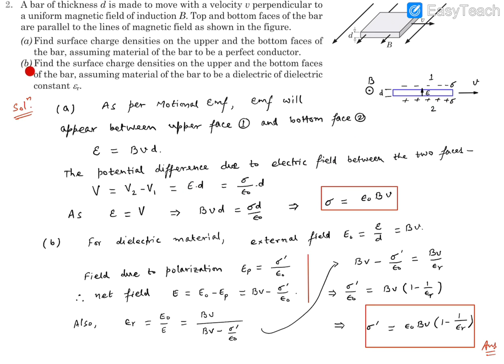Now, come to part B. If it's behaving like a dielectric material, how do we find the surface charge density? Let's call this surface charge density σ'. The potential difference is still Bvd because of the bar moving, so the external field acting on this material is E₀ = Bv/d. This is the original or external field acting.